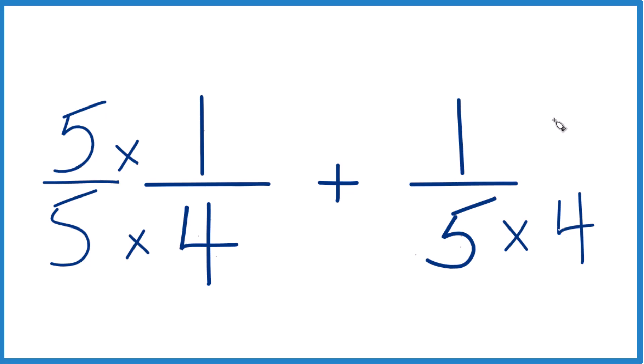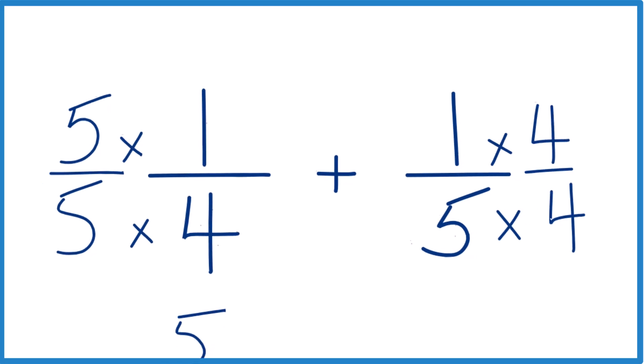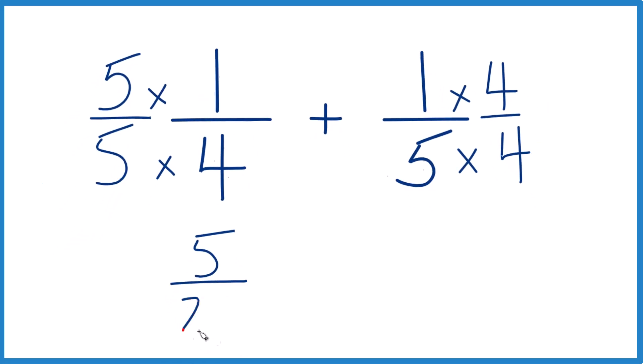Over here, we multiplied by 4. So numerator multiplied by 4. And now 5 times 1, that's 5. And 5 times 4 is 20. And 5 20ths, that's the same. That's an equivalent fraction to 1 fourth. Same value.